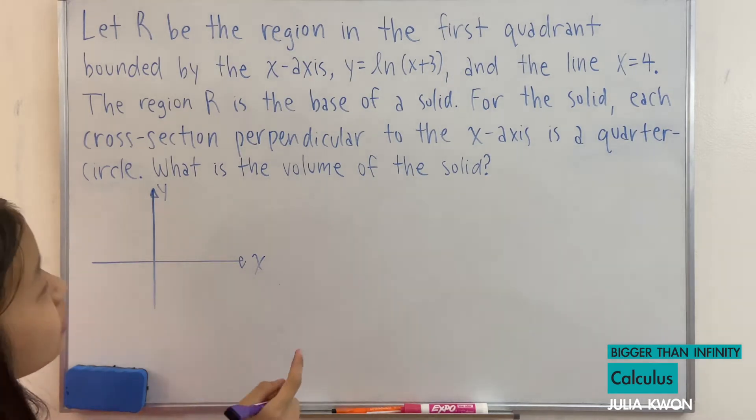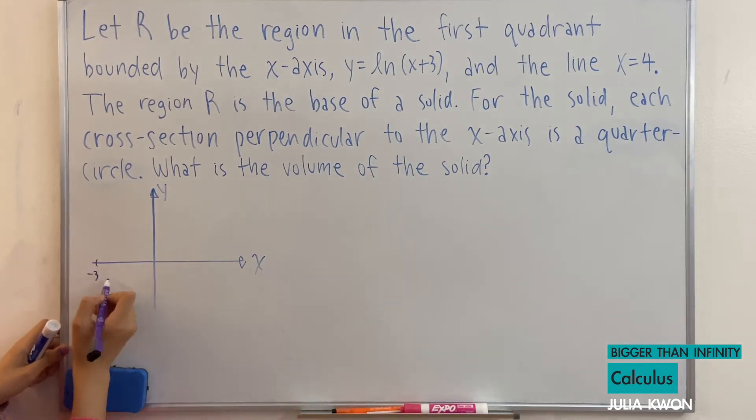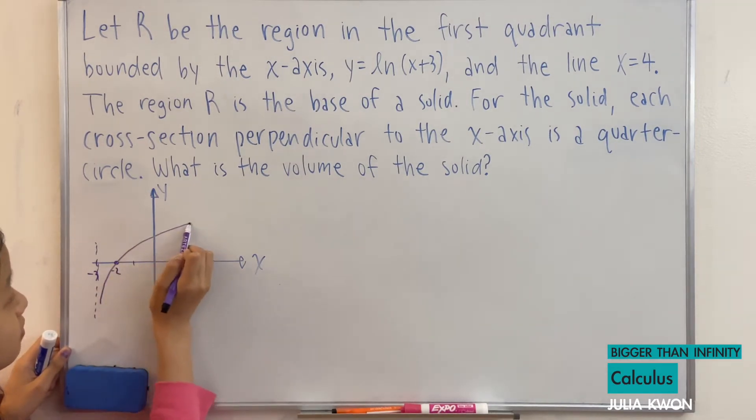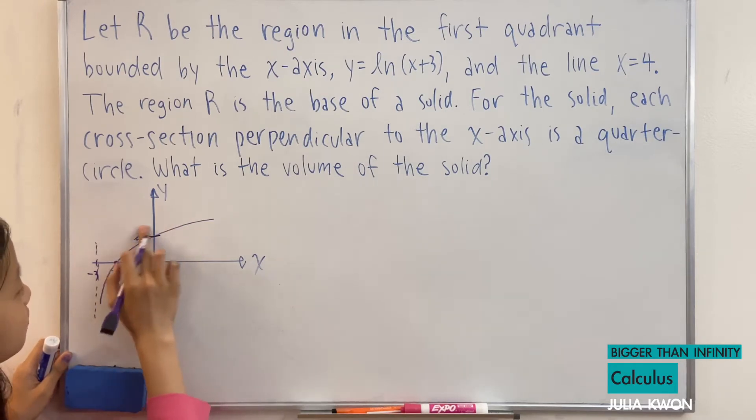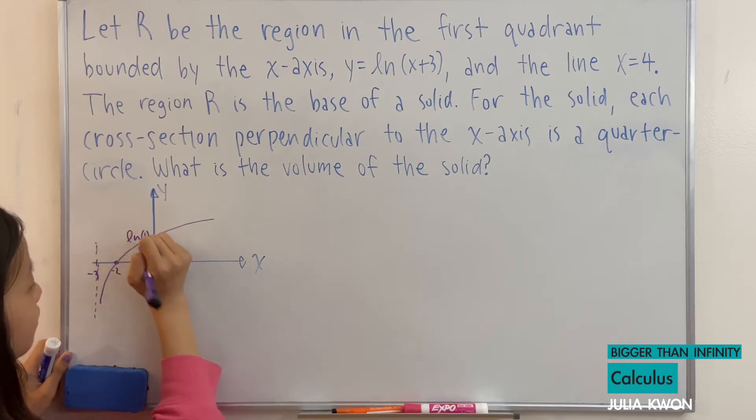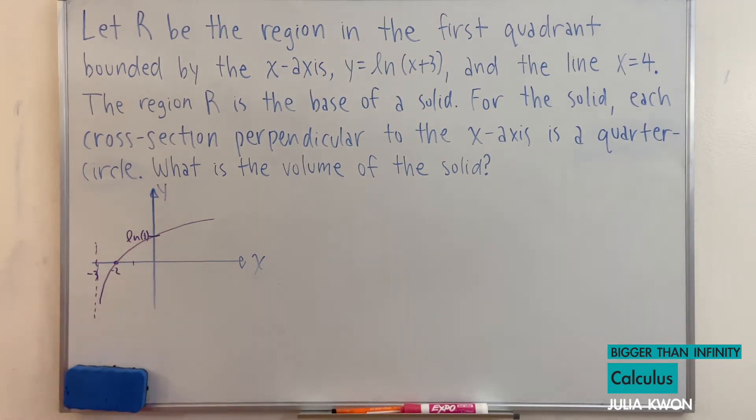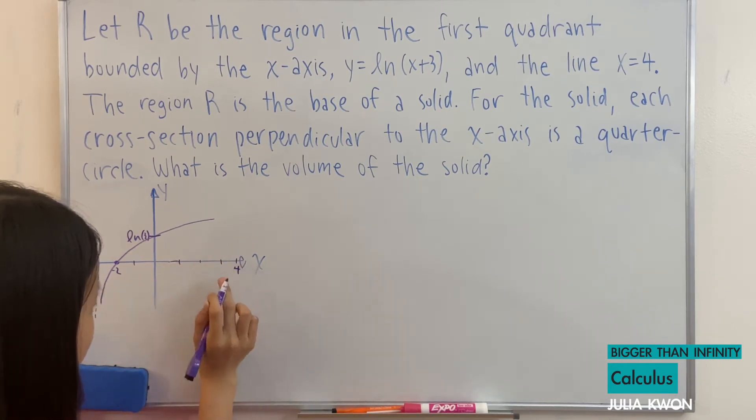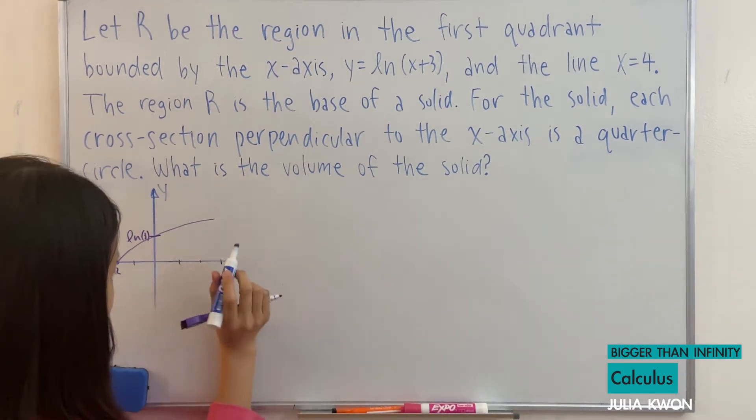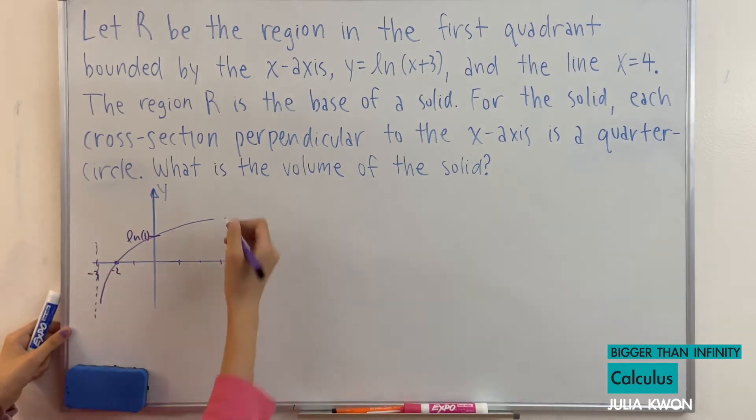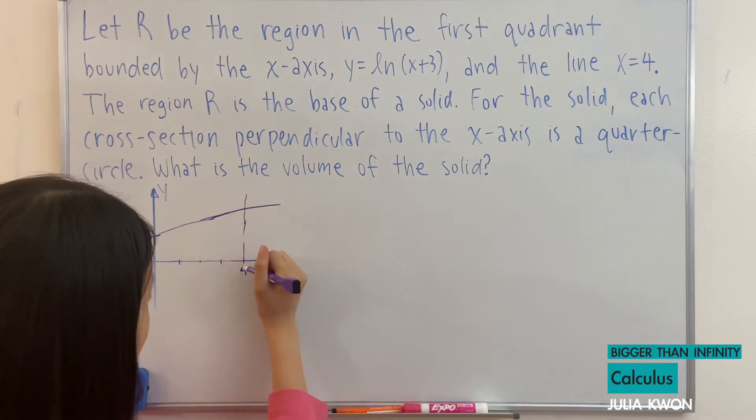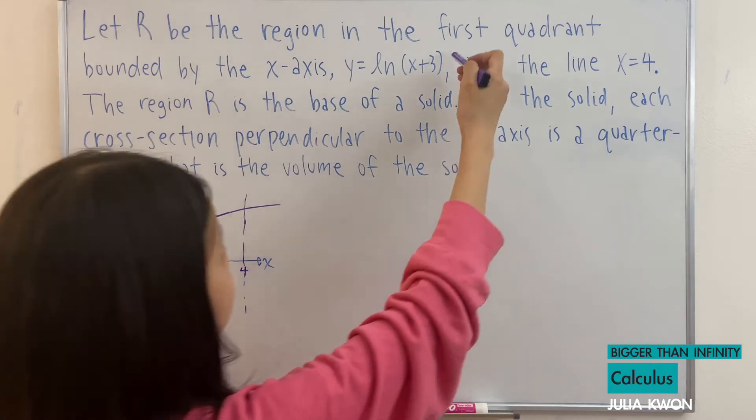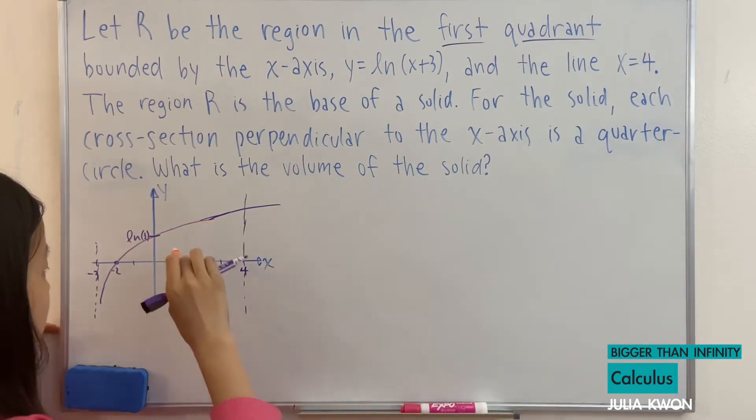Okay, the graph of y = ln(x+3) will look like this. Here would be -3 and here's -2. This is a vertical asymptote at x = -2. So the graph would look something like this, and here is ln(3). And then we also have the line x = 4. Oh, I did not draw this very correctly. Here's 4 and this is x = 4. And since we're just focusing on the first quadrant, we can shade the graph in here.